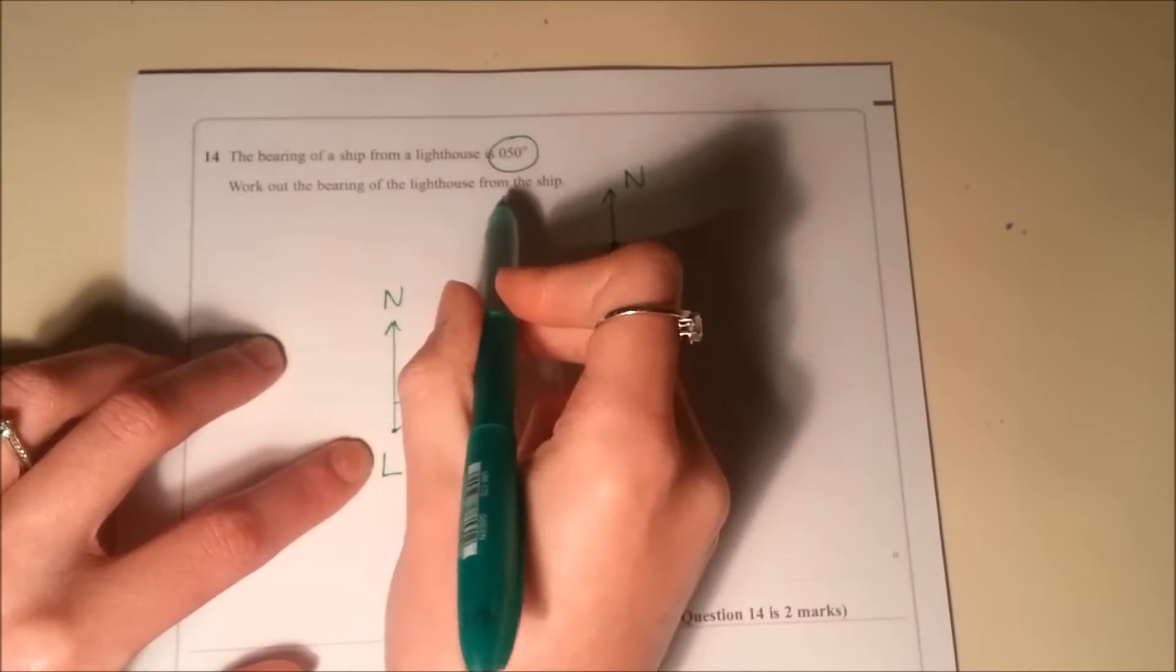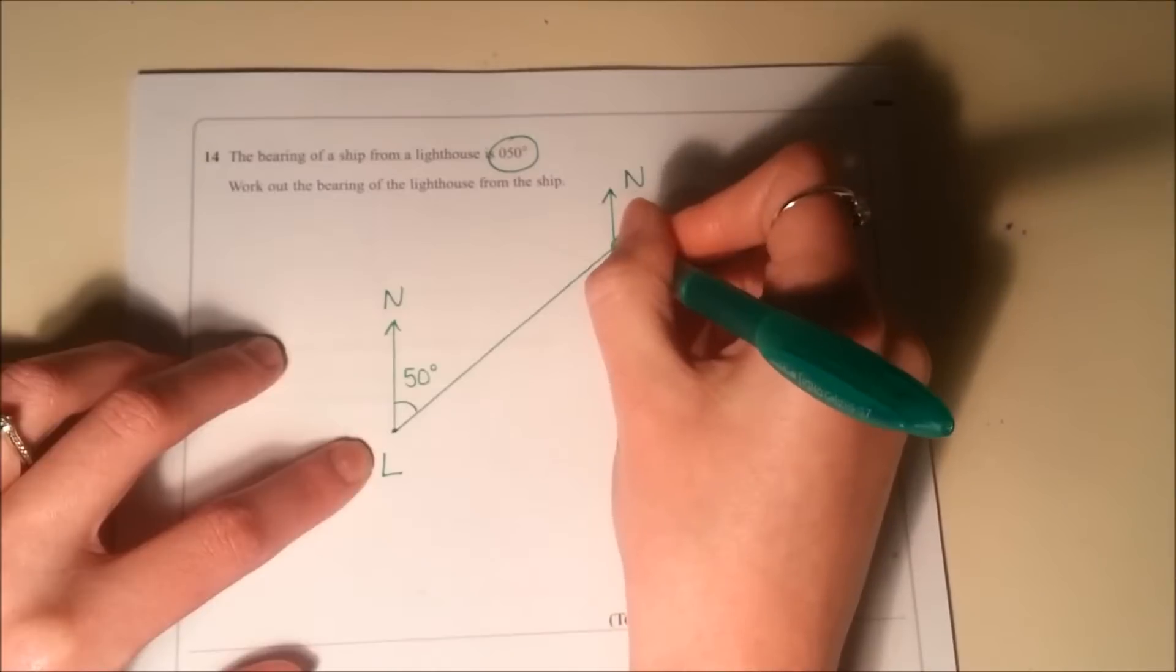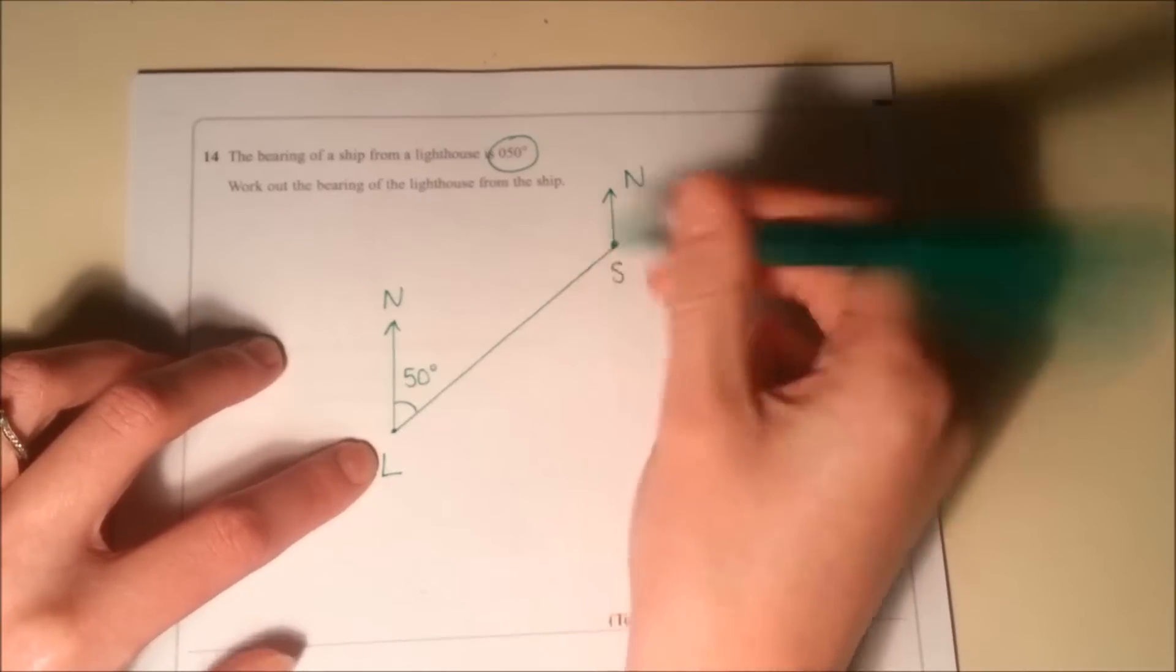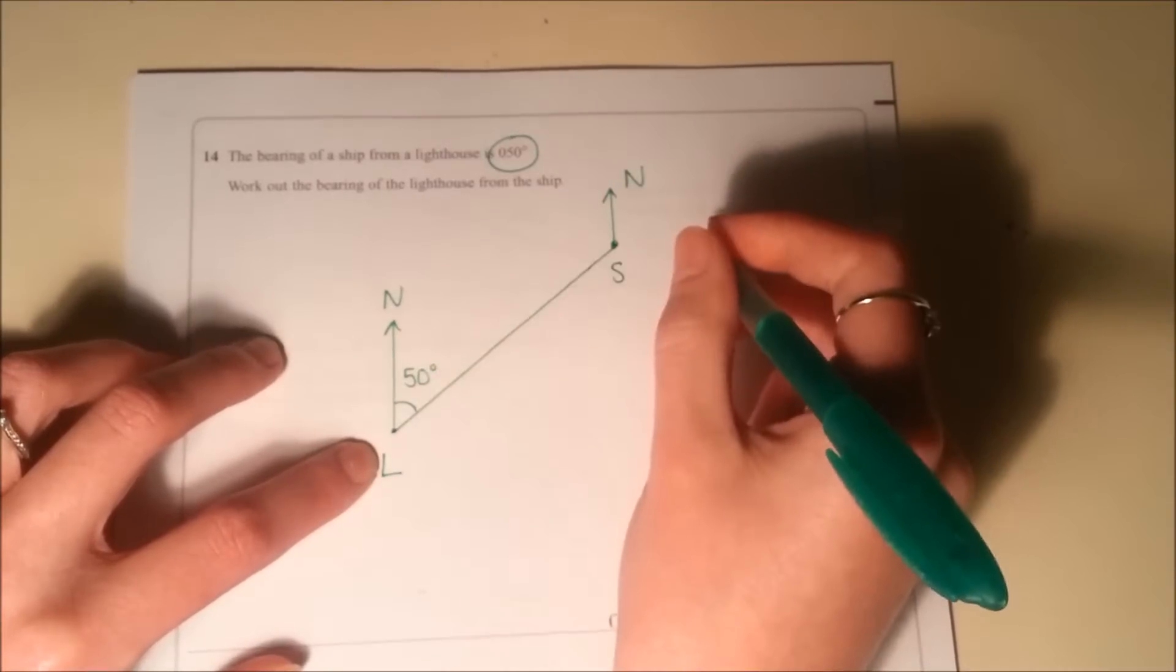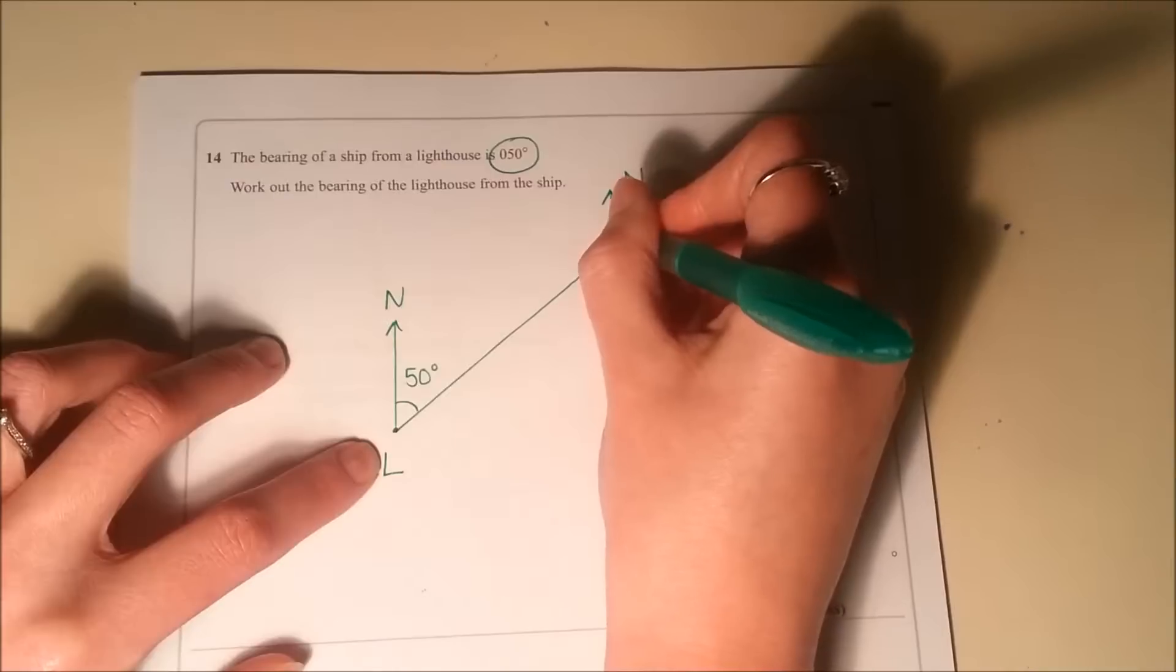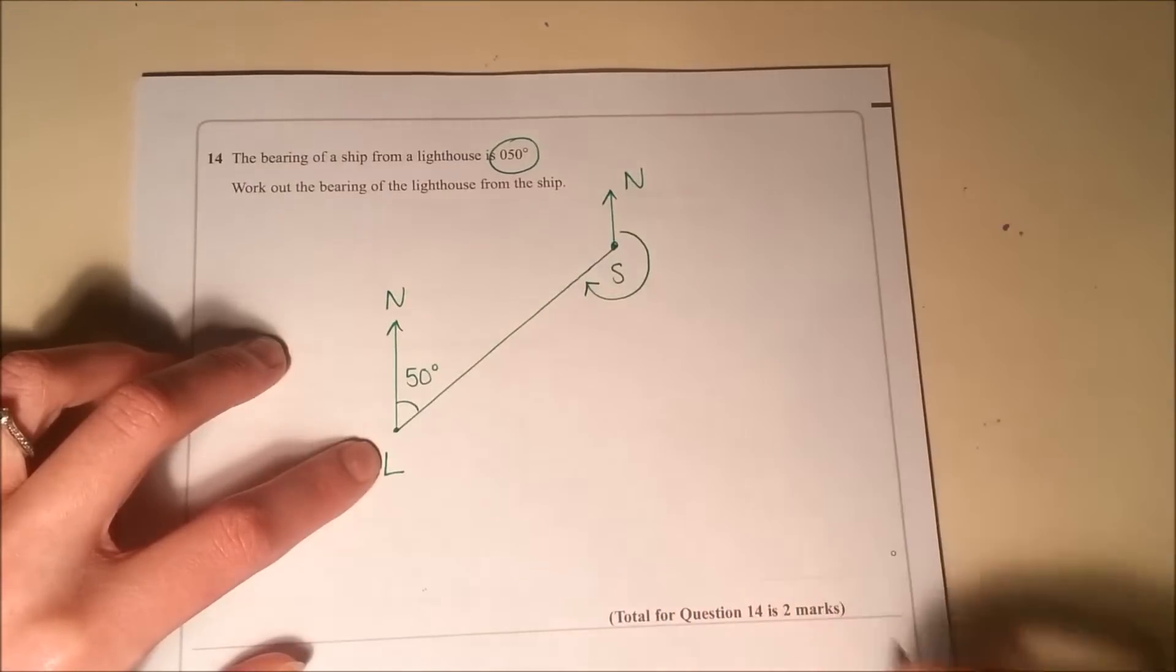I need to work out the bearing of the lighthouse from the ship. So if I'm standing on the ship and I want to look at the lighthouse, and I'm facing north, what angle do I have to turn through, so I'm then facing back towards the lighthouse. Bearings are always measured around from north, clockwise, so I'm going to need this angle here.